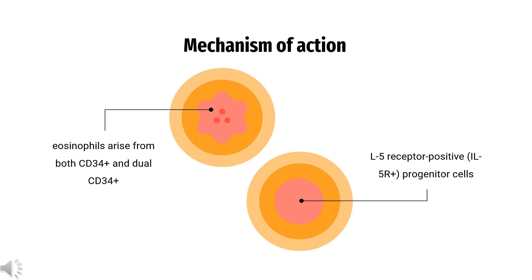unlike IL-5's low-affinity binding, binds with high affinity to domain I of the alpha chain of IL-5R and blocks its signaling and the proliferation of IL-5-dependent cell lines. Benrolizumab is also an afucosylated antibody in the CH2 region, which gives it a high affinity for the FcRIII on natural killer cells, macrophages, and neutrophils. This binding triggers a magnified apoptosis response in eosinophils via antibody-dependent cell-mediated cytotoxicity.